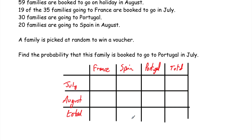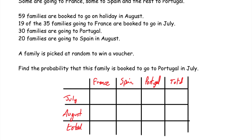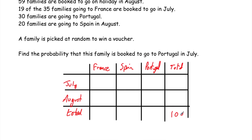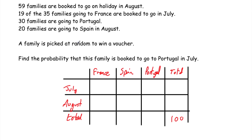There's a lot of information here, so creating a two-way table will be really useful. I've created a table with France, Spain, Portugal and Total across the columns, and July, August and Total down the rows. There are 100 families in total. 59 are going in August total, so 41 must be going in July. France has 35 total with 19 in July. 30 are going to Portugal. 20 are going to Spain in August.